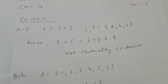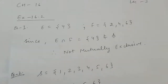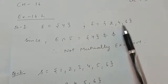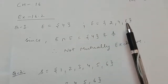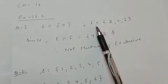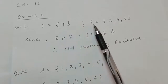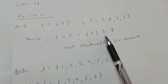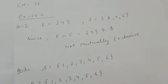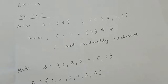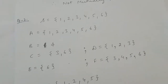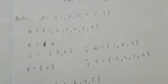Event E will include 4 only, and event F is the die shows an even number, so F will include 2, 4, and 6. They have asked if these two events are mutually exclusive or not. The intersection of these two events includes 4, so the intersection is not equal to phi, and therefore these two are not mutually exclusive.